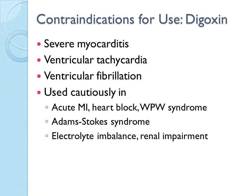Digoxin is contraindicated in patients with severe myocarditis, ventricular tachycardia, or ventricular fibrillation. It should be administered cautiously in patients with acute myocardial infarction or heart block, because it may place these patients at risk for fatal dysrhythmias. Patients with hypokalemia, hypomagnesemia, or hypercalcemia should also be administered digoxin cautiously due to the risk of dysrhythmias.